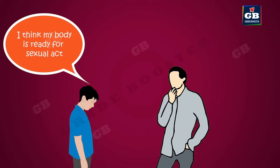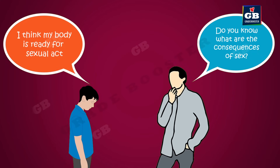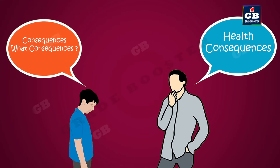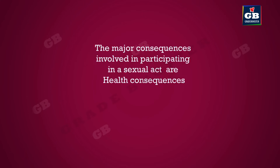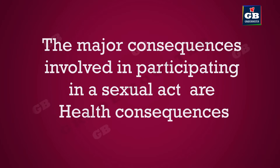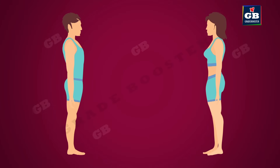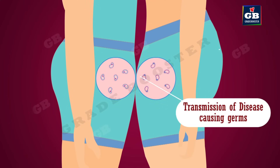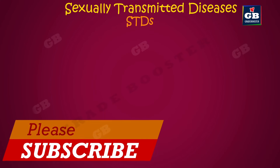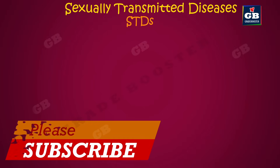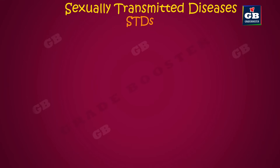Just because the reproductive system has started producing sex cells does not mean one should immediately participate in a sexual act. Before participating, one should consider the possible consequences. A major consequence is health-related: during sexual intercourse there is intimate contact between male and female bodies, creating a chance of transfer of germs and infections between partners. The diseases spread through sexual contact are called sexually transmitted diseases, or STDs.